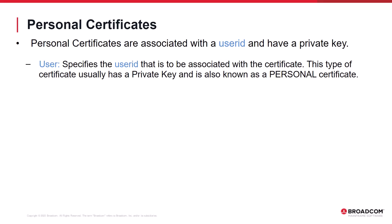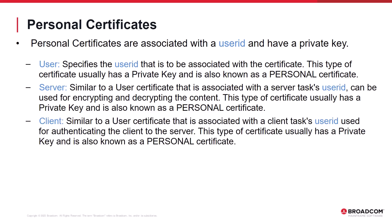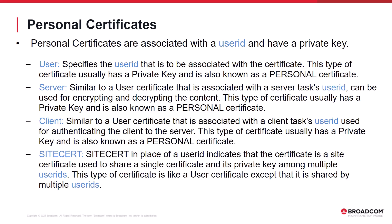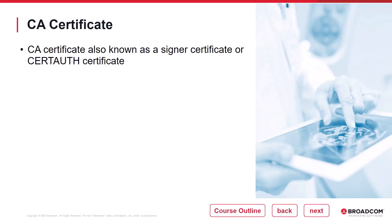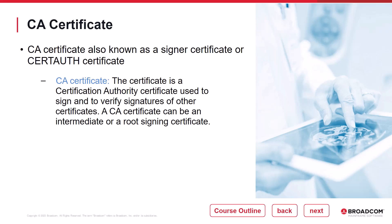There are basically two types of certificates: personal certificates and cert auth certificates. Personal certificates have a private key and are associated with a user, which can be an actual user ID, a server tasks user ID, a client tasks user ID, or a special site cert user ID. A site cert certificate is a personal certificate that can be shared between multiple users or tasks. With all types of personal certificates, the certificate and its private key are used in place of a user ID and password. Cert auth certificates are signing certificates used to sign or authenticate other cert auth or personal certificates. A cert auth certificate can be either an intermediate or a root cert auth certificate. A root cert auth certificate is self-signed, meaning it is not signed by another cert auth certificate but is signed by itself.